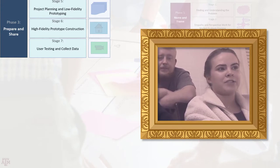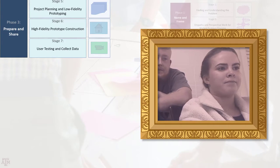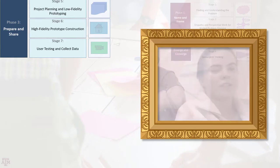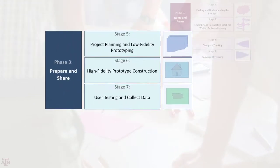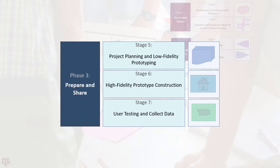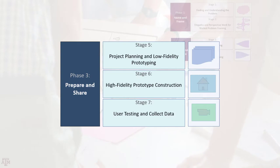A student group describes their prototype: 'We created an annual gala event with live music, dinner, beverages, a speaker, and a silent auction to raise money through ticket sales and the auction.' Once a working high-fidelity prototype is developed, the group does real-world user testing with real-world users in a real-world context, ideally implementing the prototype at a small scale or showing it to stakeholders to gather feedback.